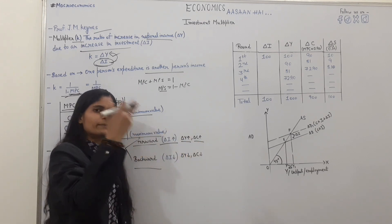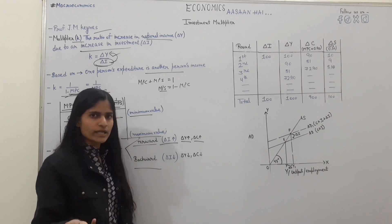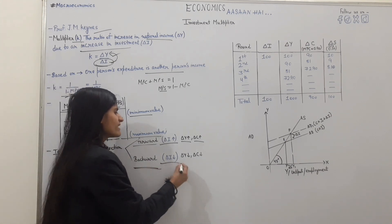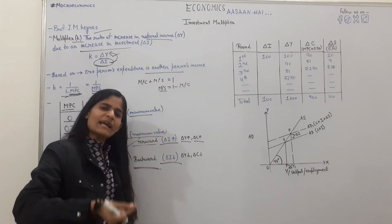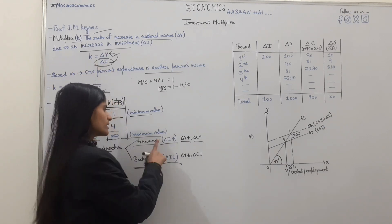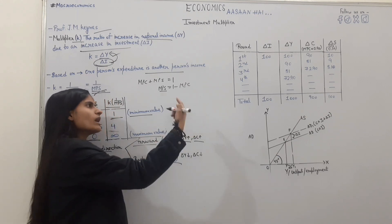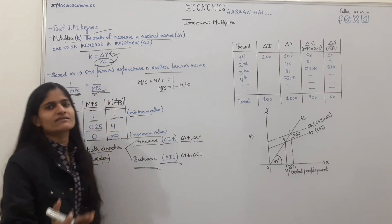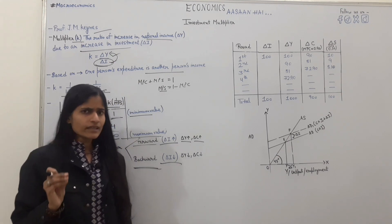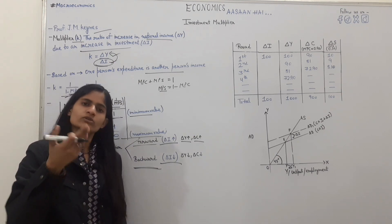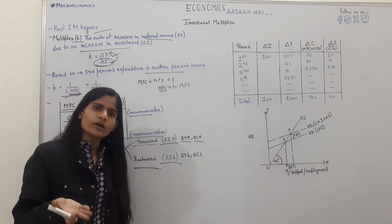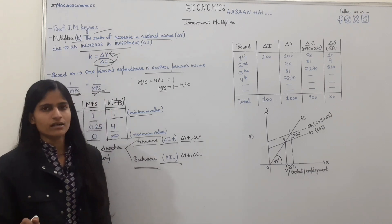When investment increases, multiple times economy will increase and consumption also increased. But backward direction is when investment is less, multiple times income will be less and consumption will be less. It works in two directions. Forward direction is when investment is increased, income is increased, and consumption will increase. Backward direction, when investment is less, then income and consumption will be less.